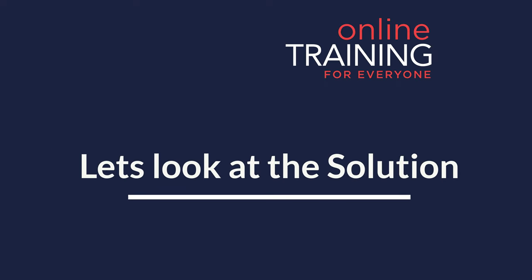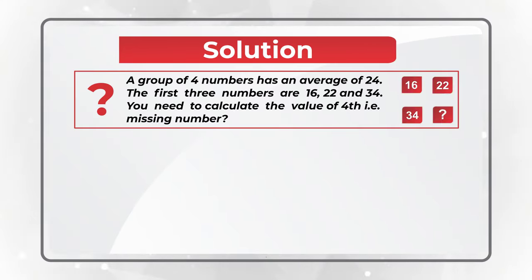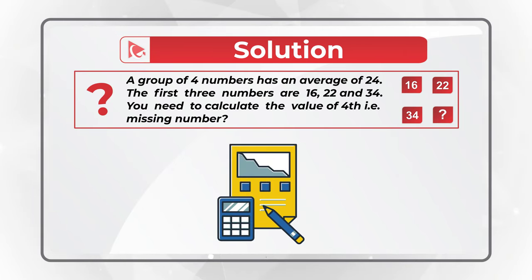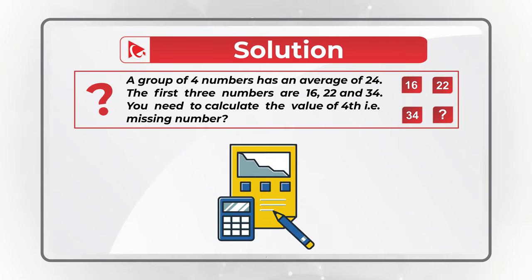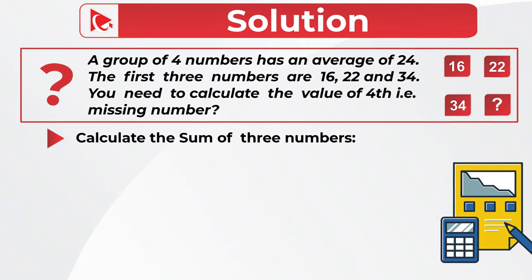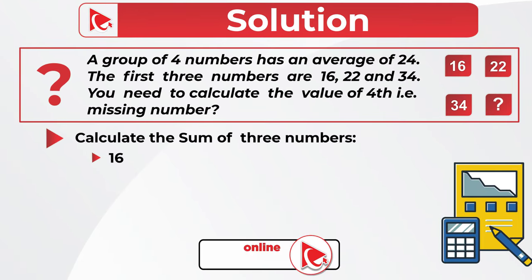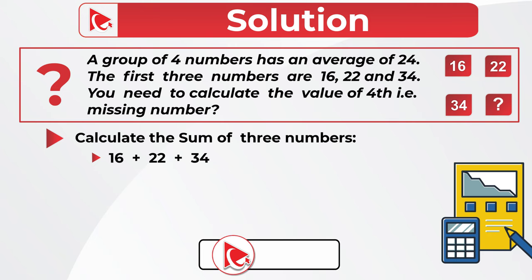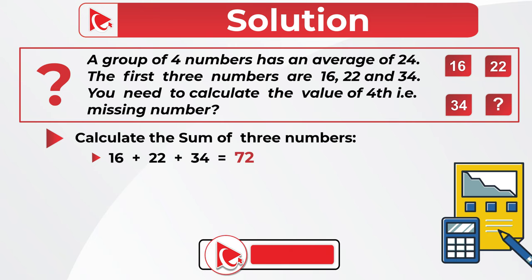Let's move forward so we can get to the correct solution together. To solve it, you can plug in one of the four solutions instead of the missing number and calculate the average to see which one is correct. But we're going to take a different route. In the first step, we're going to calculate the sum of three existing numbers: 16 plus 24 plus 34 equals 72.